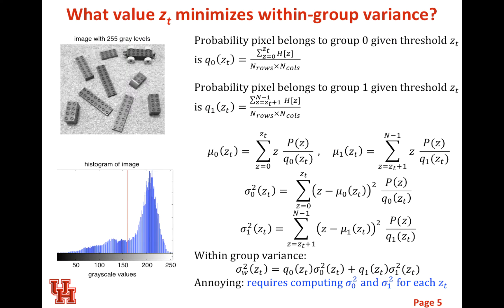Here's our review from our last lecture. If you give us a pixel, the probability that that pixel belongs to group 0, which is the background, given the threshold ZT, is just summing up all the pixels that are lighter or equal to ZT and dividing that by the total number of pixels. This gives us our quantity Q0, the probability that any pixel at random belongs to the background. And the inverse of that is Q1, the probability that it belongs to the foreground. Q0 plus Q1 are going to equal 1.